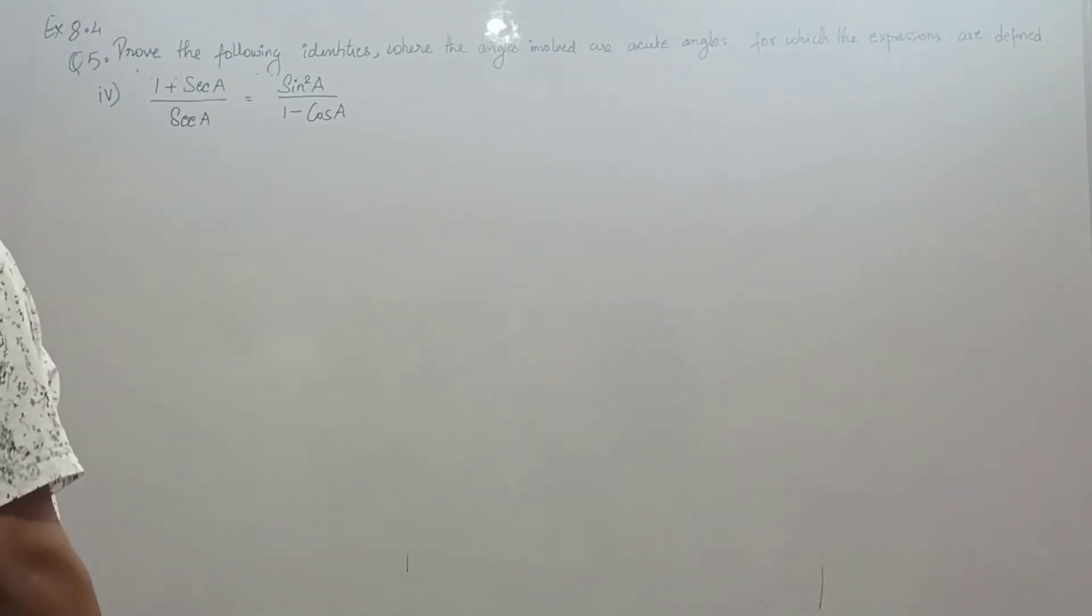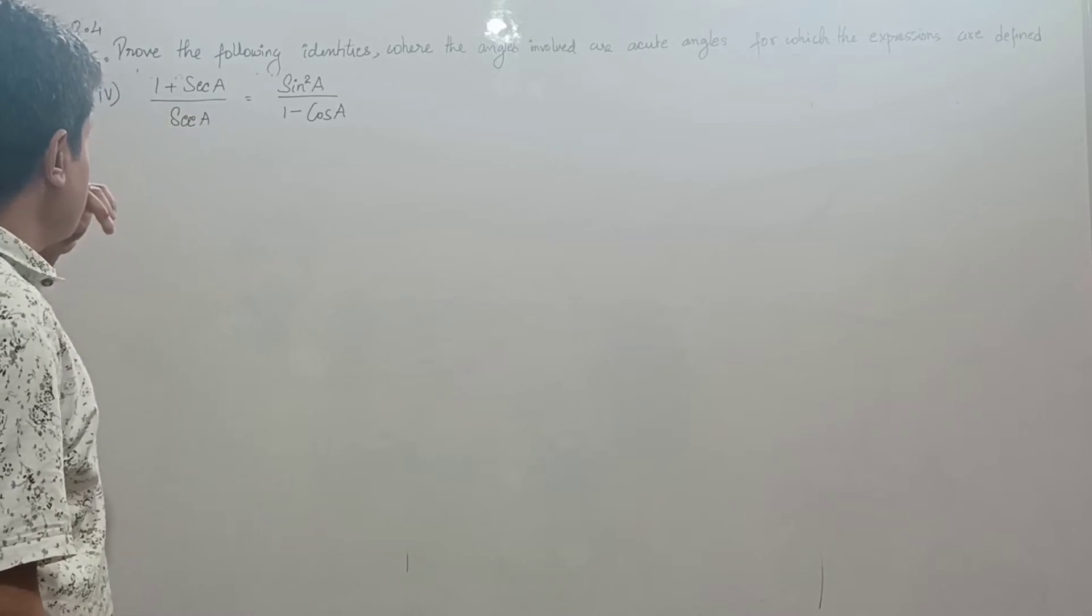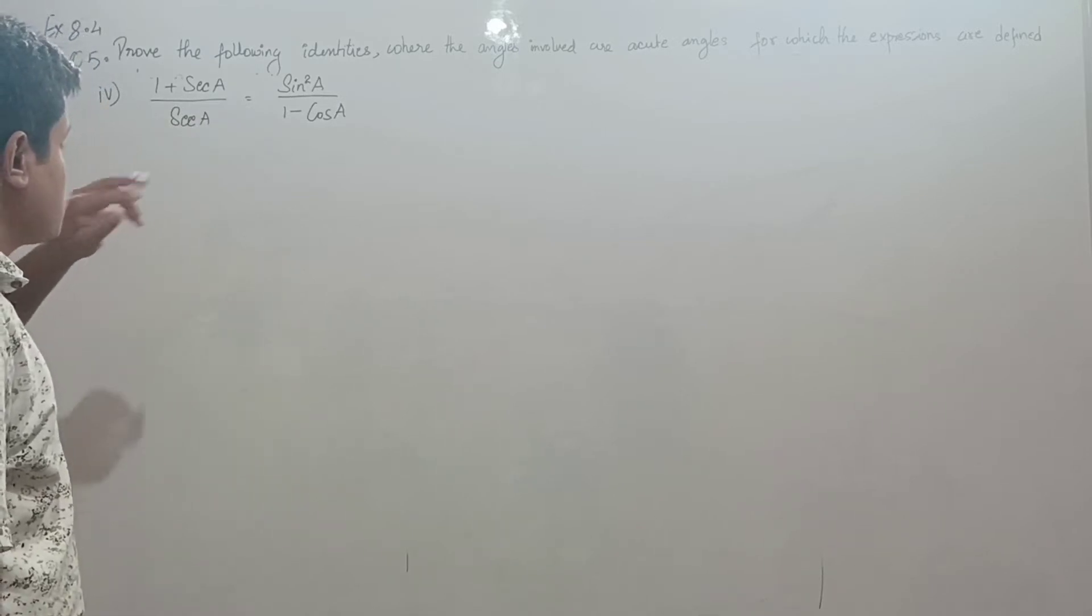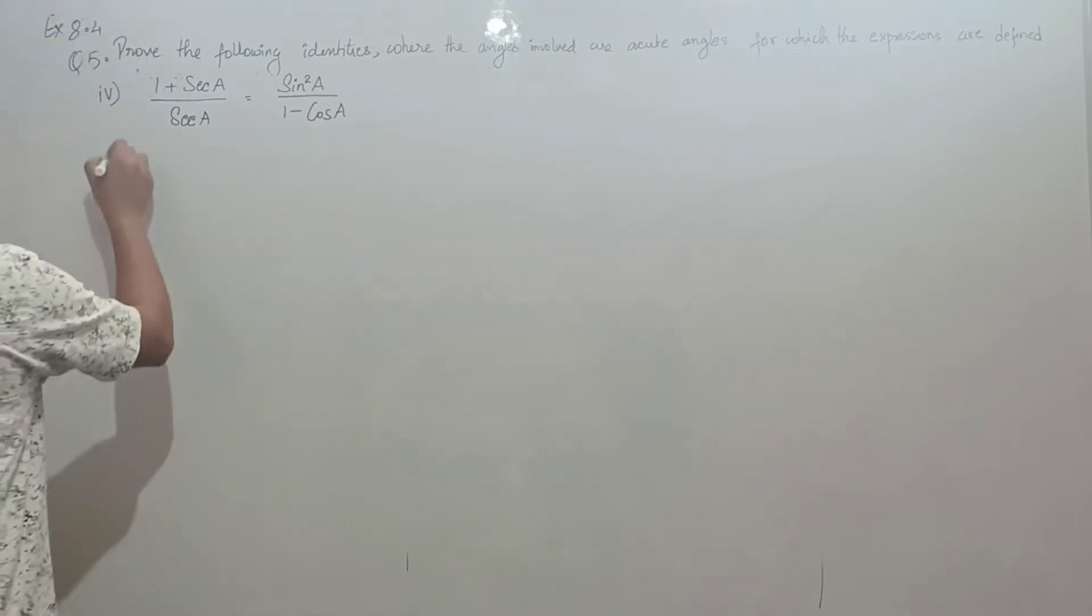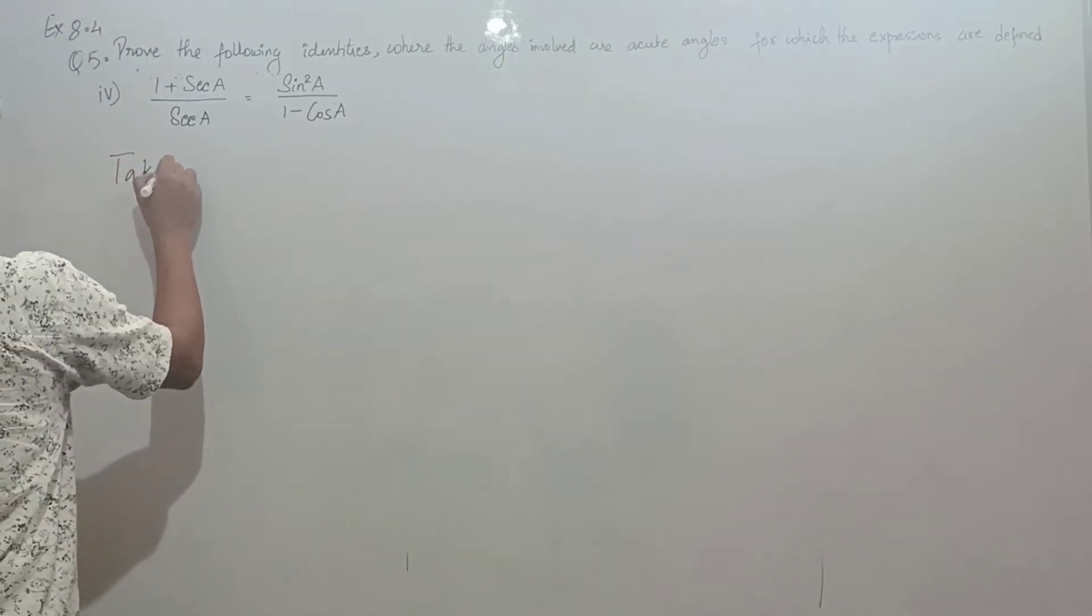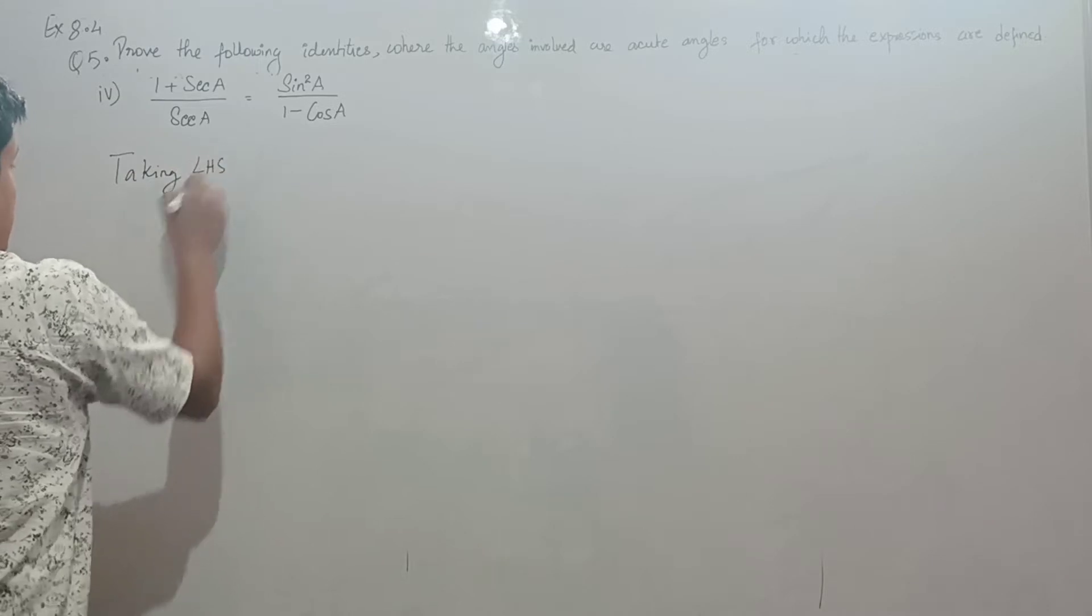Exercise 8.4, question number 5, Roman number 4: Prove that 1 plus sec a divided by sec a equals sine squared a divided by 1 minus cos a. Taking left hand side, starting with 1 plus sec a.